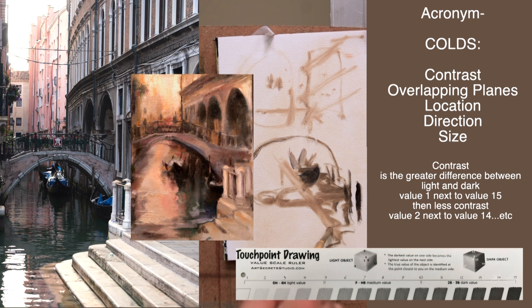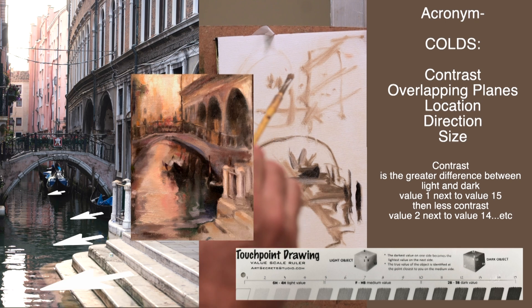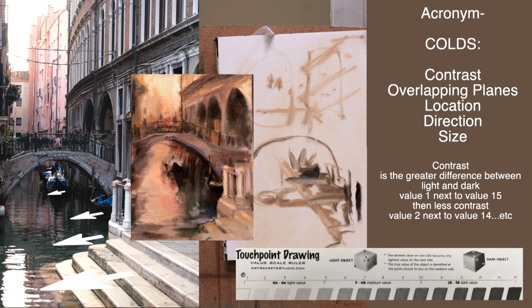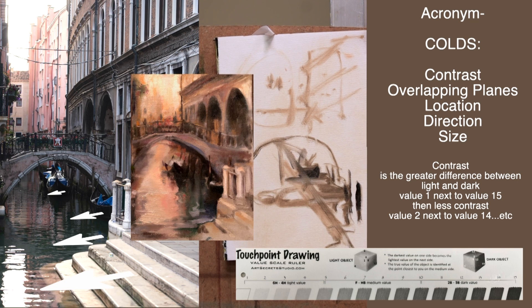Contrast, overlapping planes, location. Lower on the page is closer to me; higher on the page is farther away. Direction and size — boats closer to me have to be larger, boats farther away have to be smaller. That acronym is a great way to harmonize a painting. Harmonizing means it connects everything. But when a picture is moving diagonally into the page, the acronym COLDS works wonderfully.